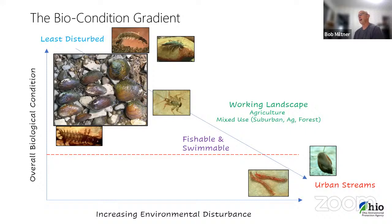We can look at this in terms of environmental disturbance, going from undisturbed or least disturbed background conditions — think forested headwaters — where we find the most biologically diverse communities. As we increase disturbance with agriculture, building houses, industry, and wastewater, we tend to start losing species and reduce overall diversity and the goods and services we expect of our waters. The Clean Water Act has the fishable and swimmable goal as the minimum, but the overall goal is to maintain and restore the integrity of the nation's waters — constantly striving to move toward restoration where possible.